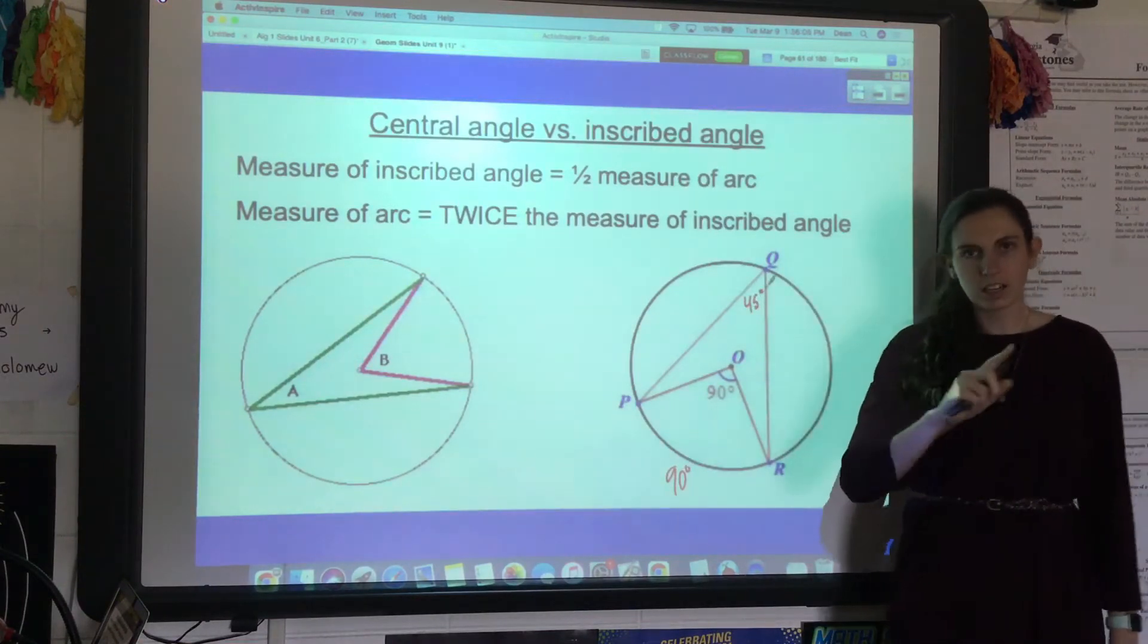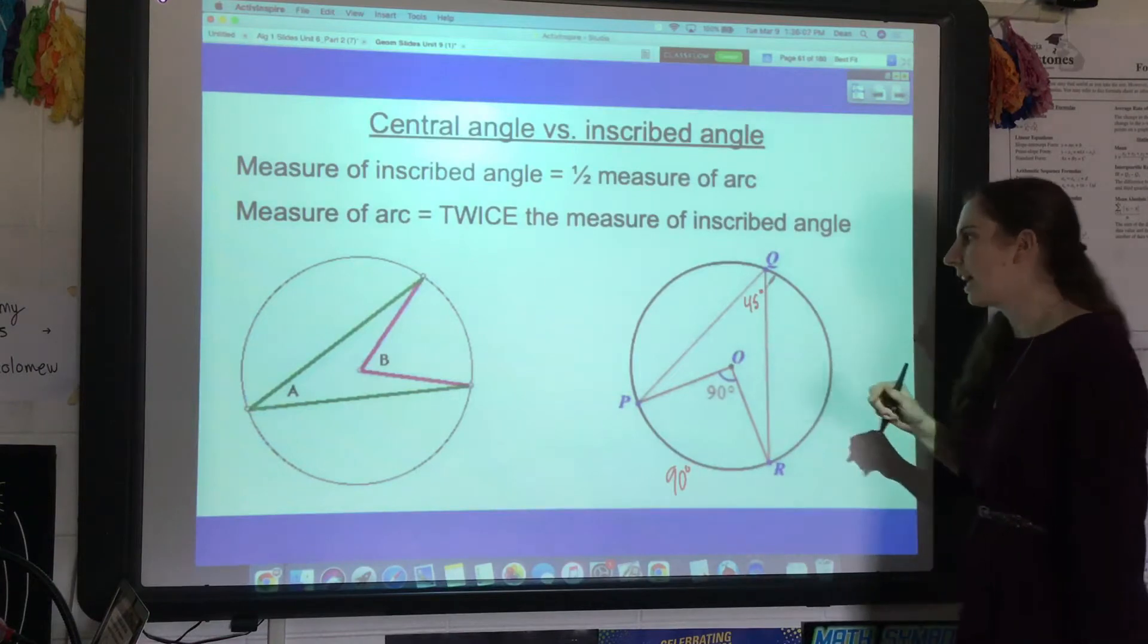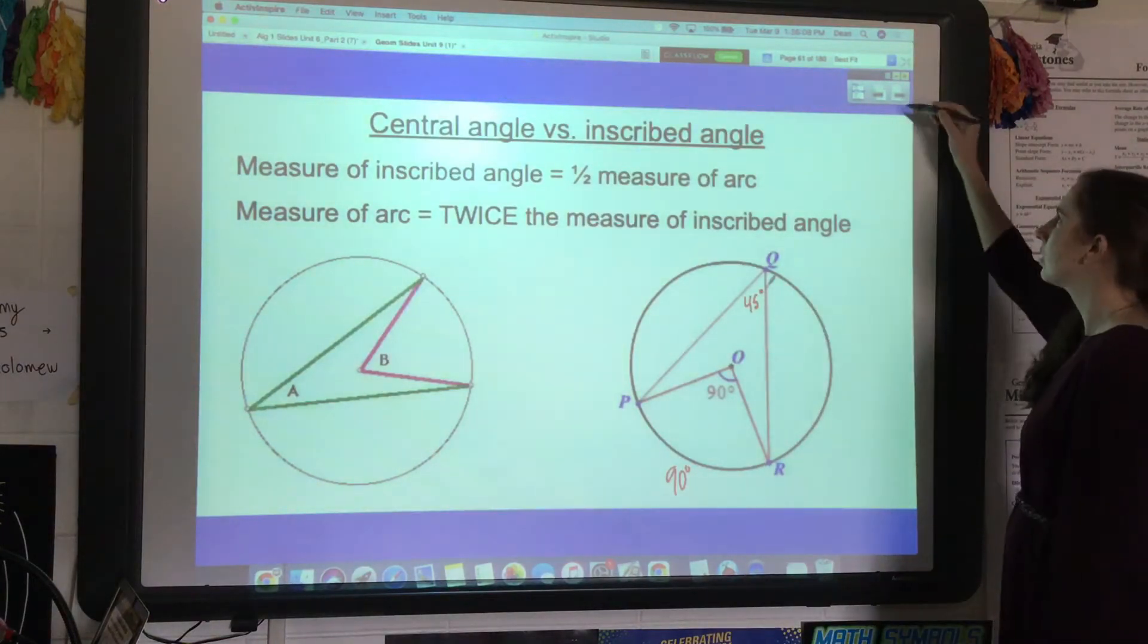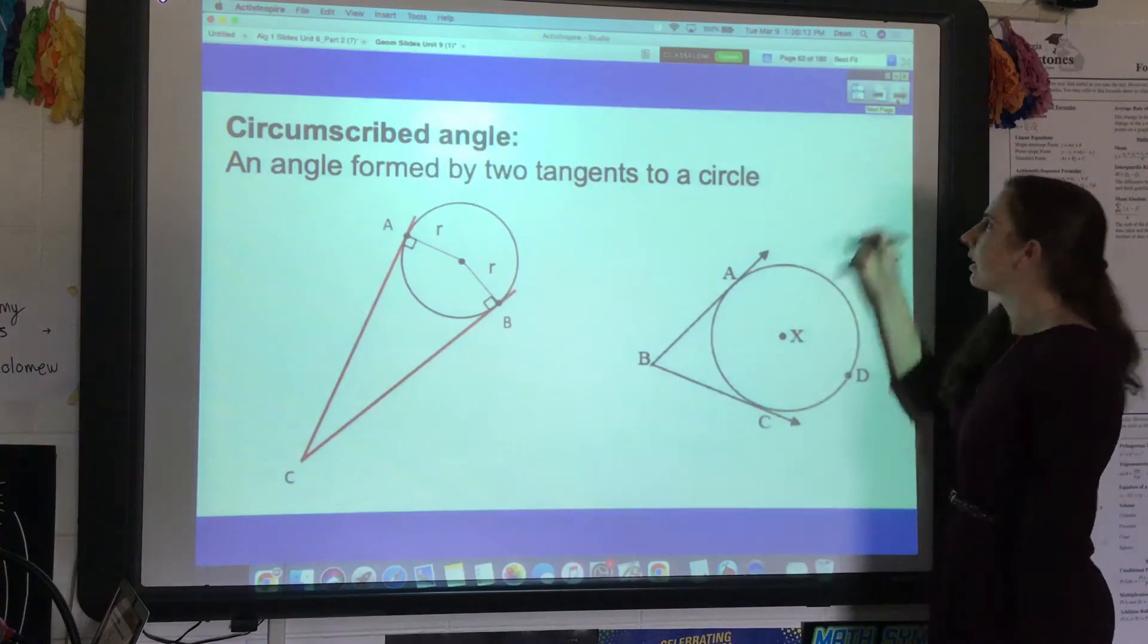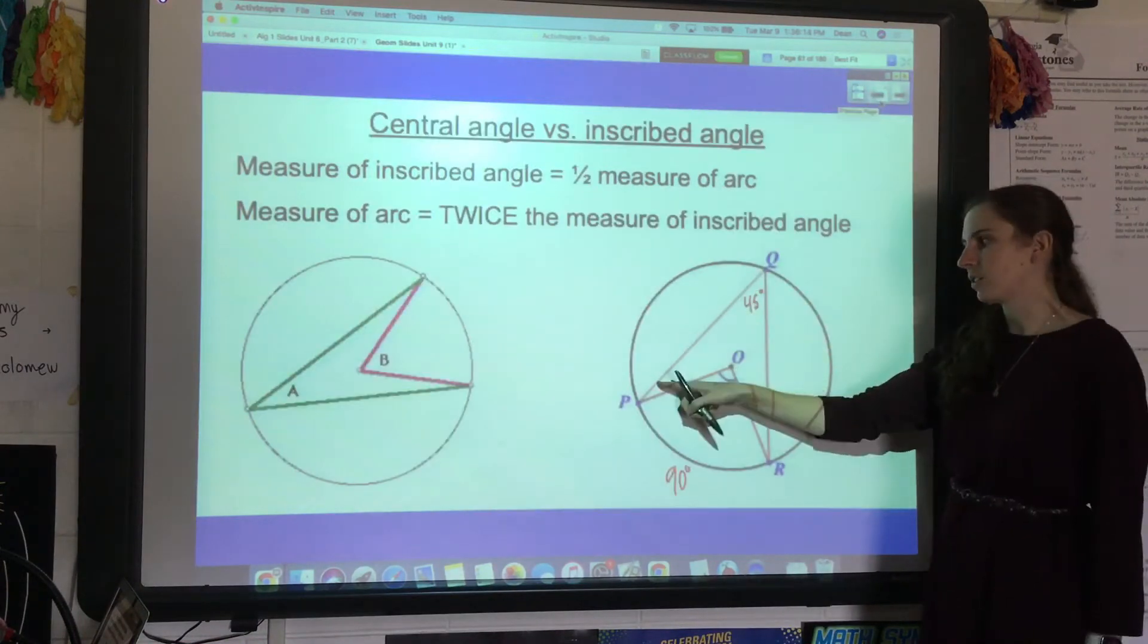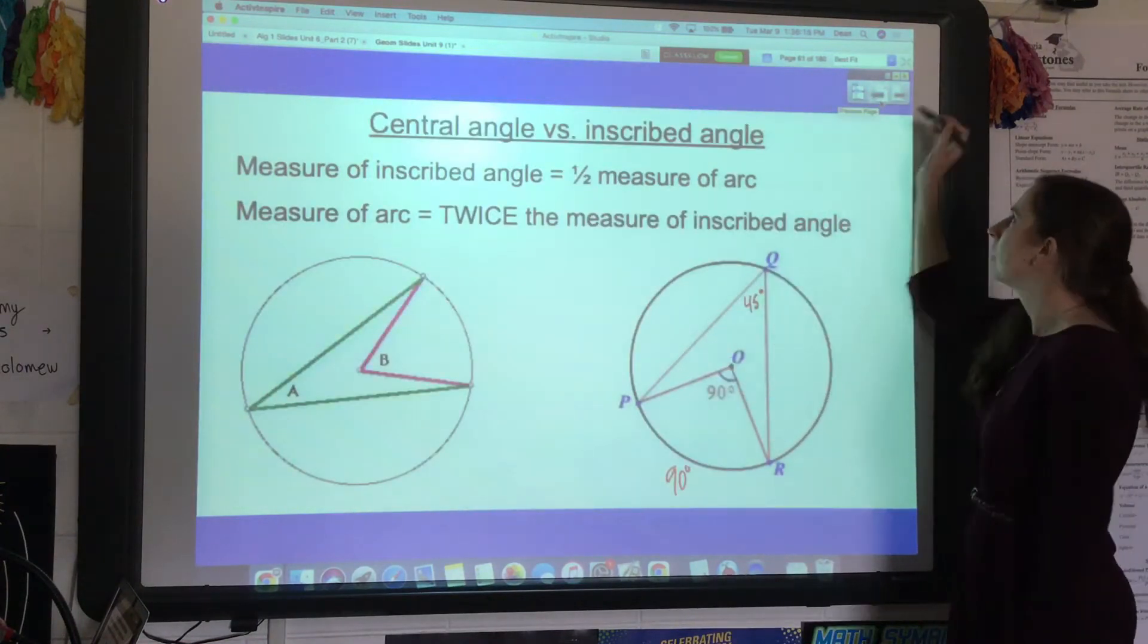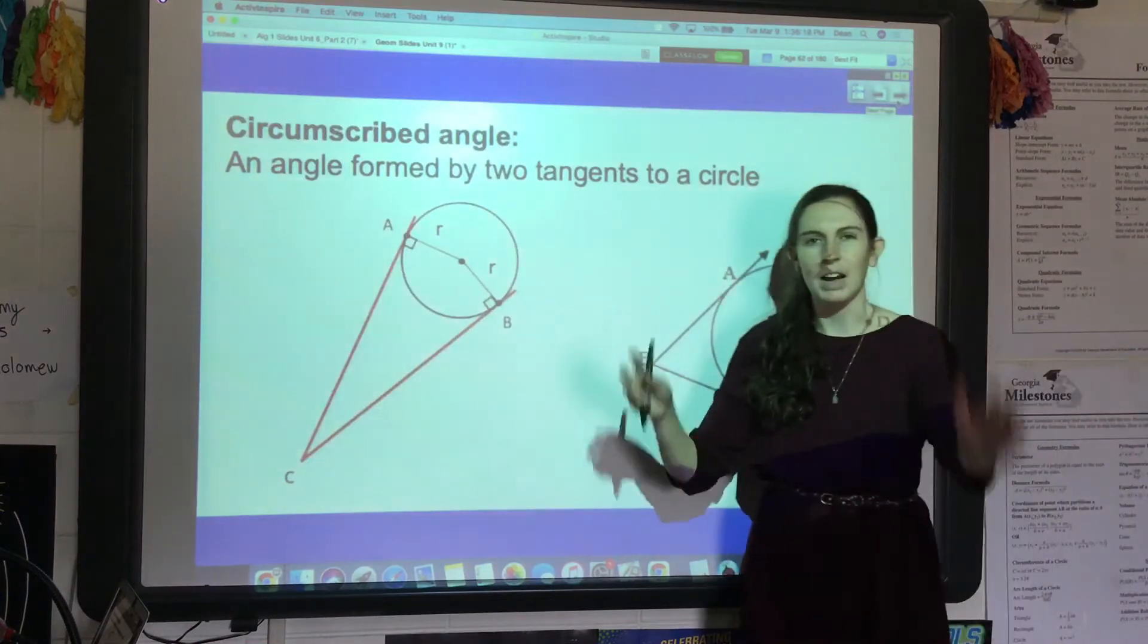But now we're going to talk about one final type of angle that has to do with circles, called circumscribed angles. Inscribed angles are inside the circle; circumscribed means kind of outside, like hugging it almost.